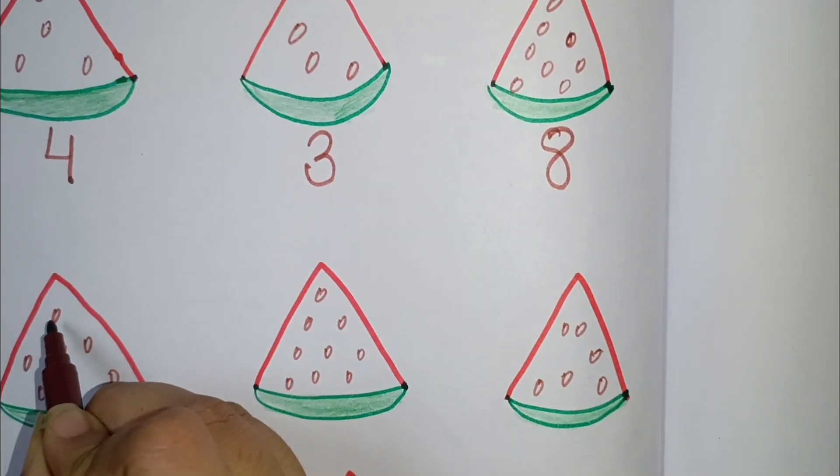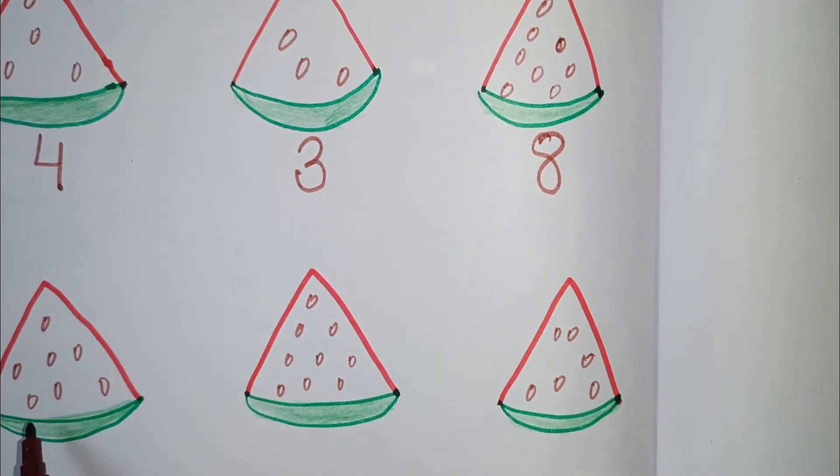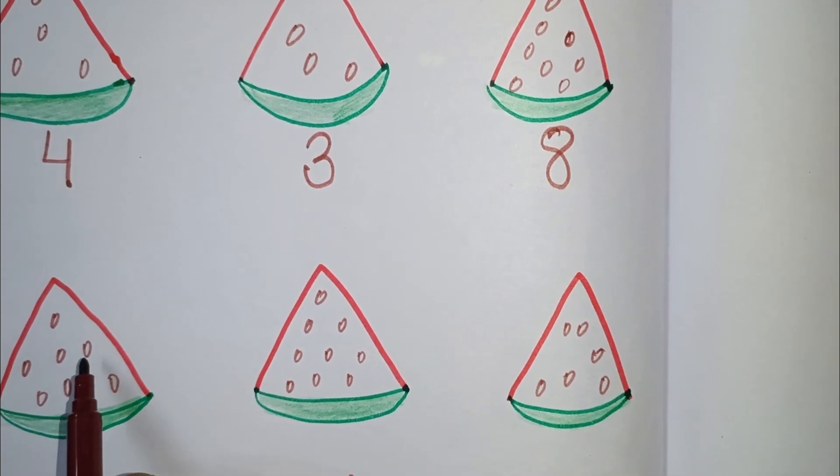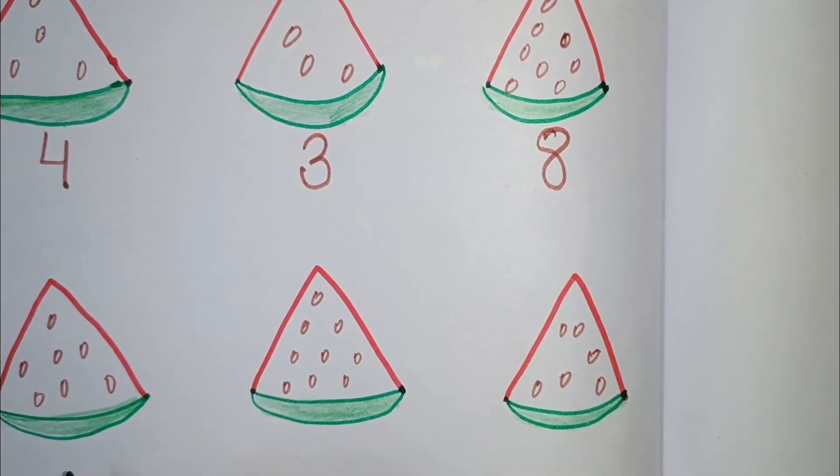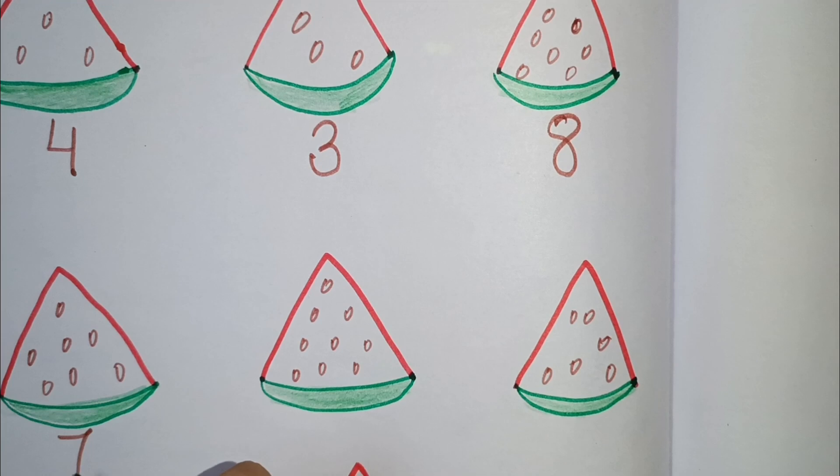Next is 1, 2, 3, 4, 5, 6, 7. This watermelon has 7 seeds. So we will write here 7.